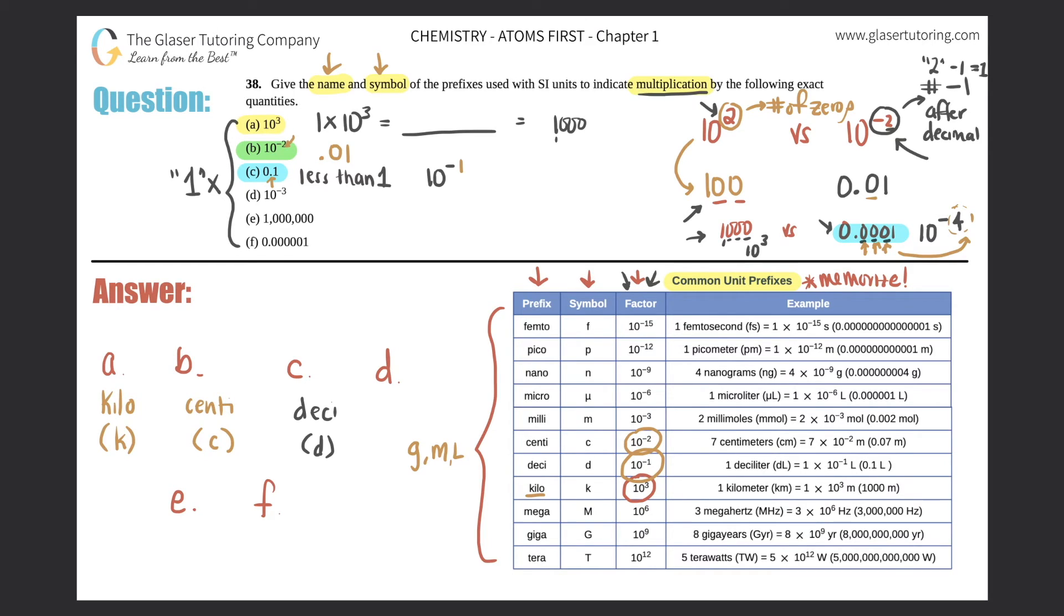Next. Now we're going to pick up the pace a little bit. I think you guys know what you're doing. 10 to the negative 3. I'm just going to scan 10 to the negative 3. Oh, that's here. 10 to the negative 3 is always going to be milli or lowercase m.